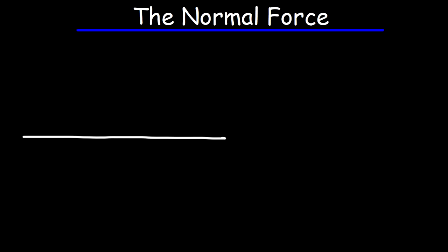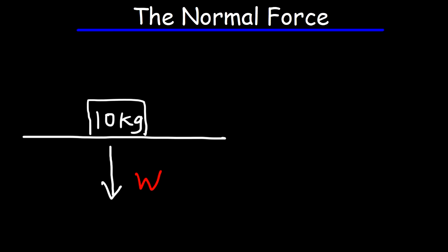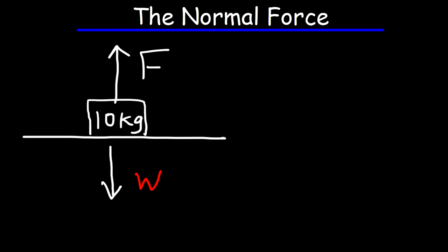Let's use an example to illustrate it. Say we have a horizontal surface and a box with a mass of 10 kilograms. The box exerts a downward weight force on the surface due to gravity. The surface must exert an upward force on the box, because the box is resting and is in a state of equilibrium — the downward force must be canceled by an equal and opposite upward force. This force is known as the normal force, sometimes denoted by the letter N. It is a force perpendicular to the surface.